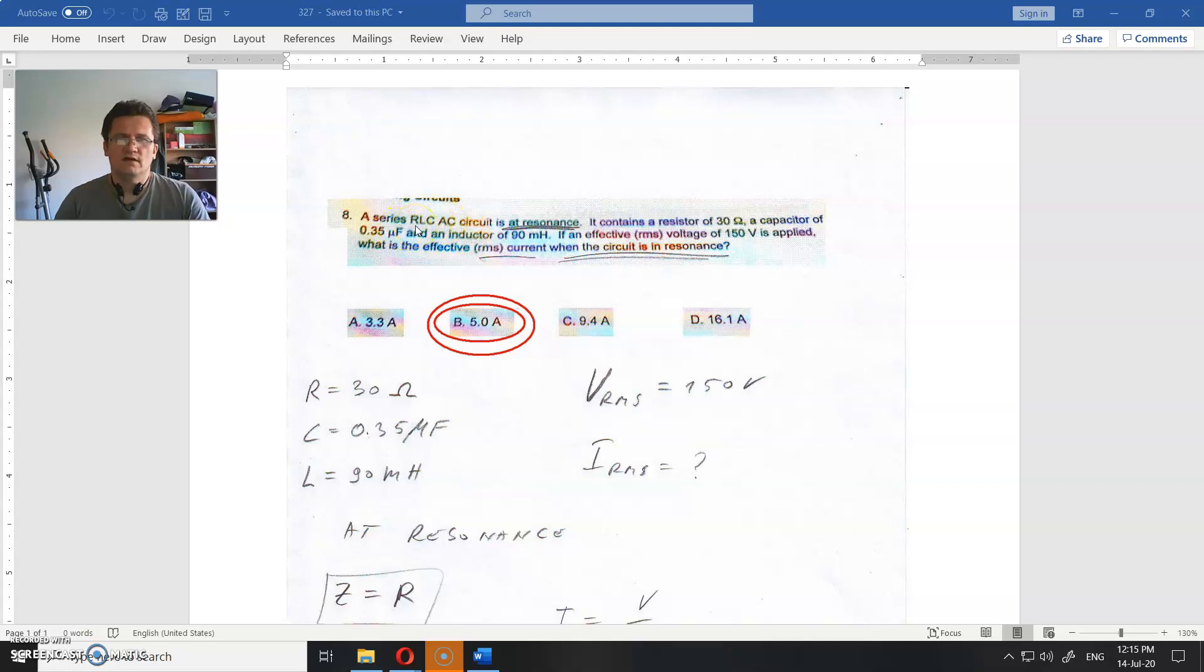A series RLC AC circuit - this is resistance, inductance, capacitance. AC is alternating current circuit.